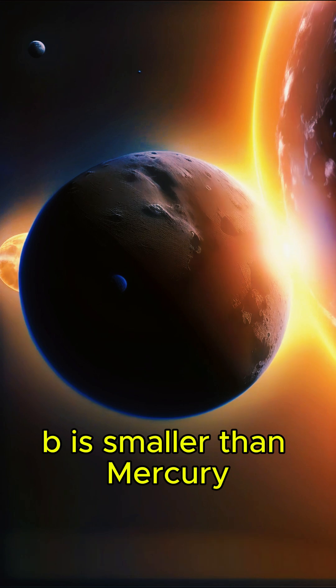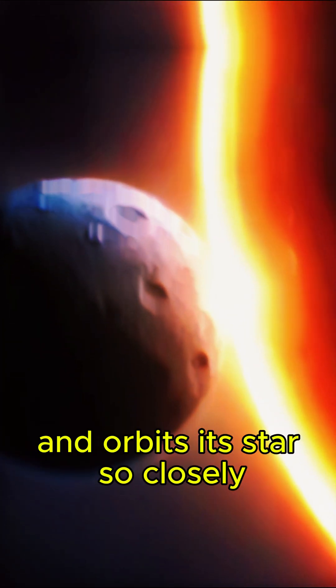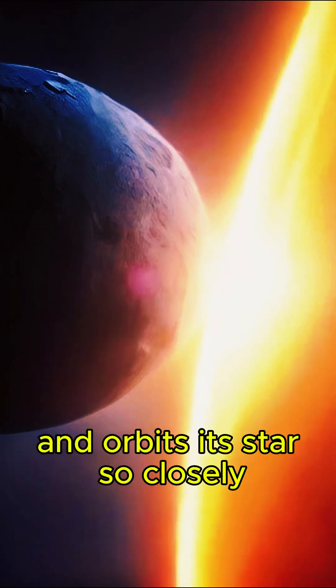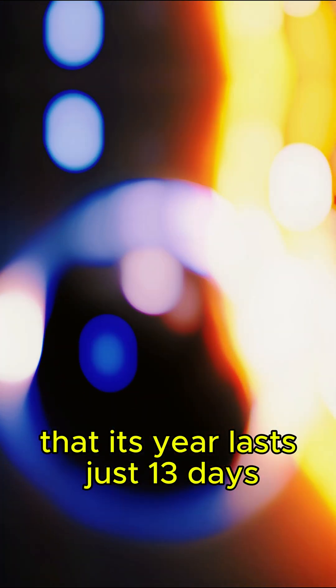Kepler-37b is smaller than Mercury and orbits its star so closely that its year lasts just 13 days.